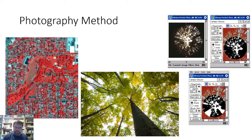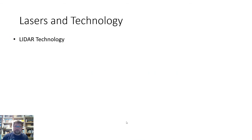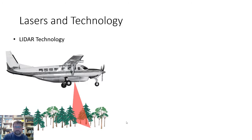Photography equipment doesn't just capture canopy cover — it also gives you other information. You can get an idea of branching of trees, where potential nest sites might be, whether there's any mistletoe or disease in the canopy. It just gives you a lot of additional information.